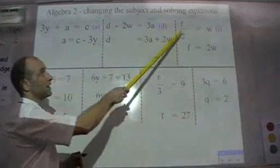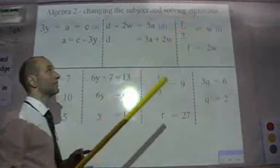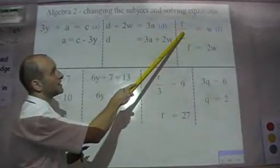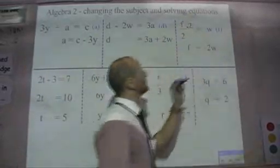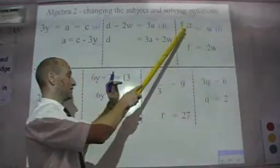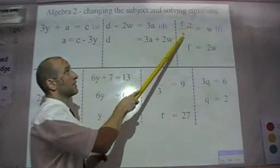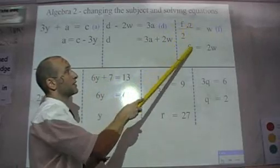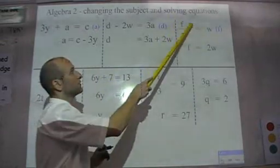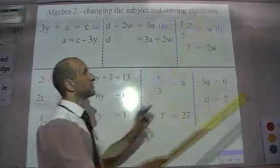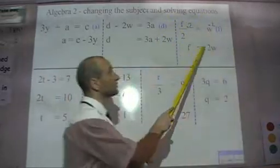This equation here, I've got F divided by 2 is W, so I need to get rid of that 2. If I multiply this side by 2, 2 times F divided by 2 cancels. The 2s cancel, leaving me F on its own. I've times this side by 2, so I've times this side by 2, and I get F equals 2W.